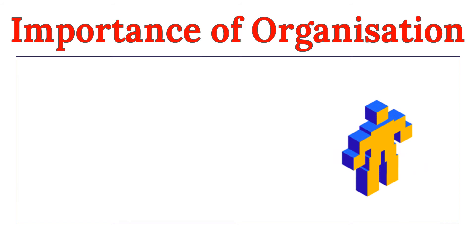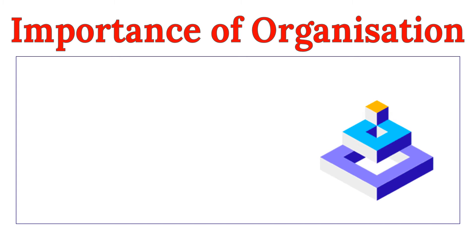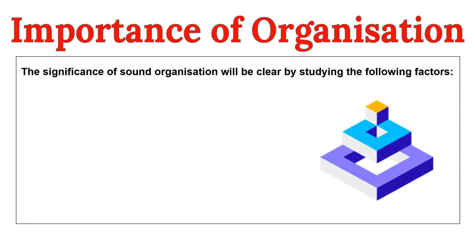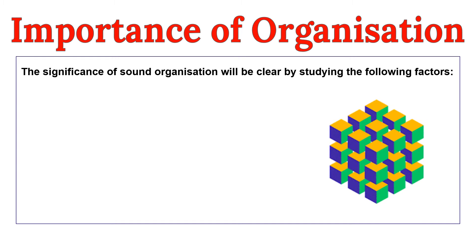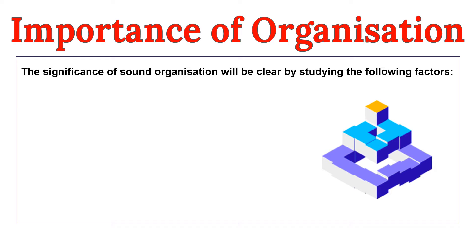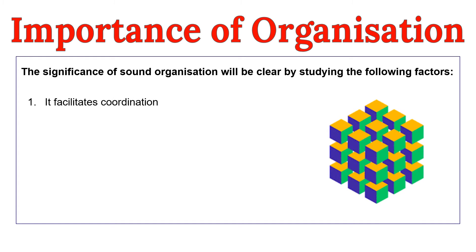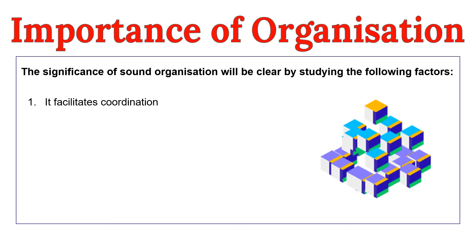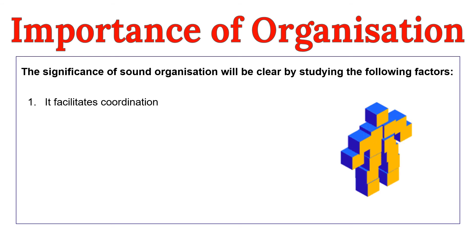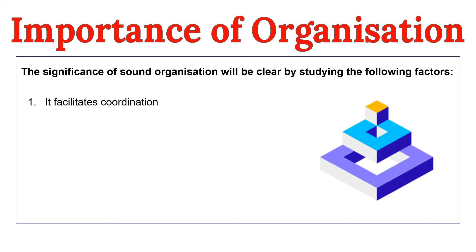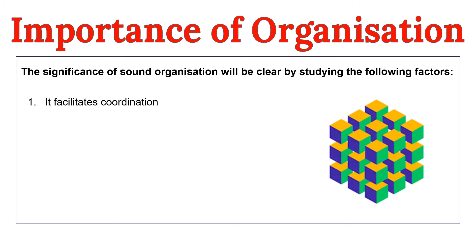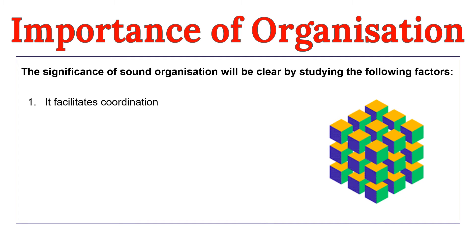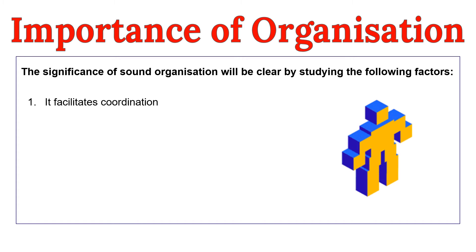Moving on to the next slide, we will now discuss the importance of organization. Organization is one of the basic functions of management. Organizing includes establishing an appropriate structure of relationships among the various positions and individuals in the organization. A sound organization structure can contribute to the success of an enterprise in more than one way — it is, in fact, the backbone of management. The first point of significance is that it facilitates coordination. Organization is an important means of bringing coordination among the various departments of the enterprise, creating clear-cut relationships between departments and helping lay down balanced emphasis on various activities.